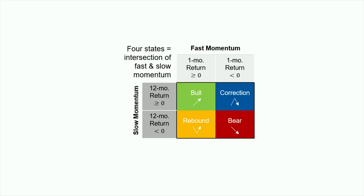And then we've got two turning point states. Correction would be the past year is positive and the past month is negative. A rebound, the past year is negative and the past month is positive.